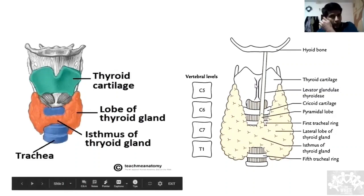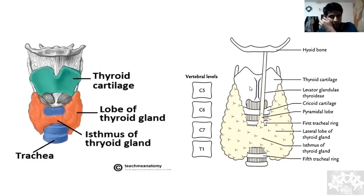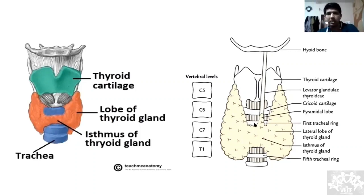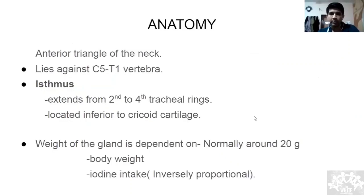The thyroid cartilage is visible here where the arrow points, and beneath it is the cricoid cartilage. So the isthmus is technically just beneath the cricoid cartilage.